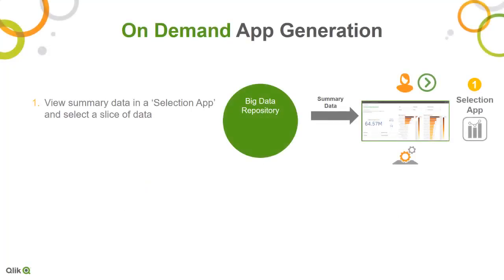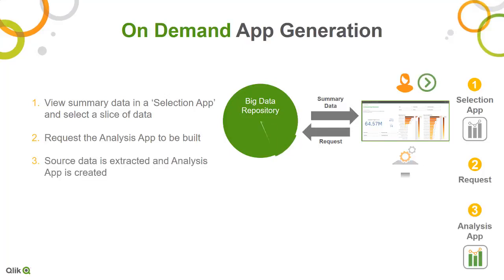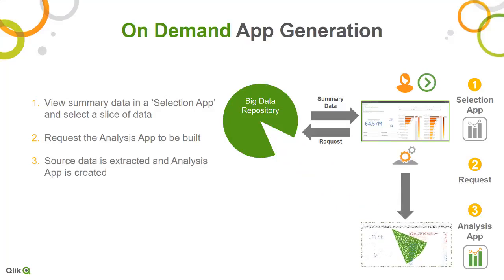On-demand app generation works through a selection app populated with aggregated dimensional data. Users can make selections based on a given criteria and then choose to generate a new app which dynamically reloads a data slice based on the selections into an analysis app for further exploration at a detailed level.